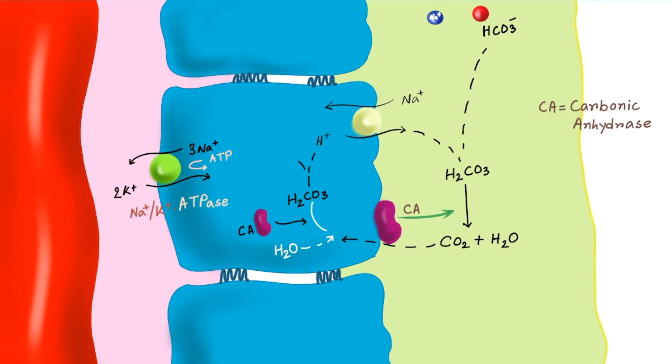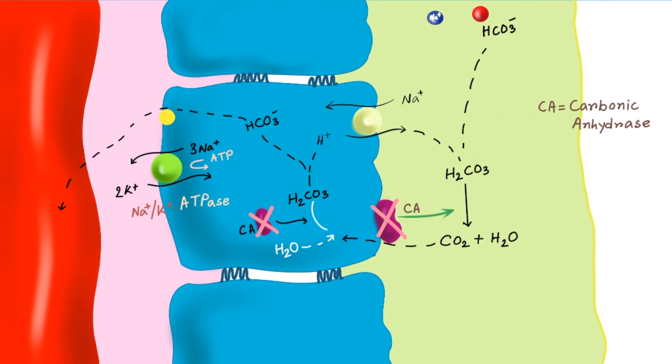As it is present intracellularly, we will call it intracellular carbonic anhydrase. And the other one is luminal carbonic anhydrase. This carbonic acid breaks down into hydrogen and bicarbonate. This bicarbonate goes out of the cells with a special transporter in exchange of chloride ion. This bicarbonate reaches to the interstitial area and finally goes back to the circulation.